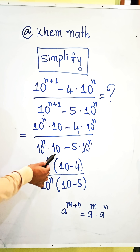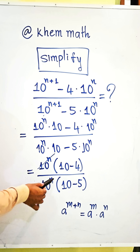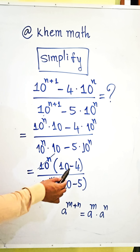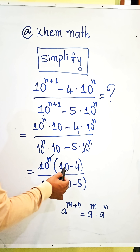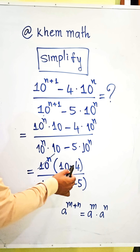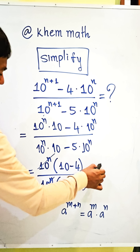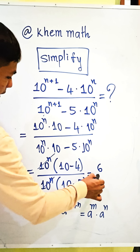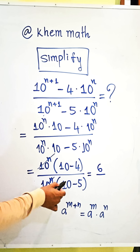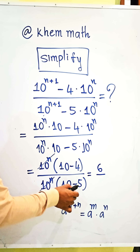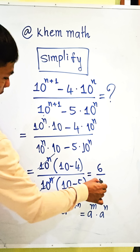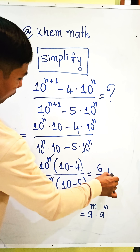We simplify 10 power n. So we get 10 minus 4 equals 6, divided by 10 minus 5 equals 5. The answer is 6 over 5.